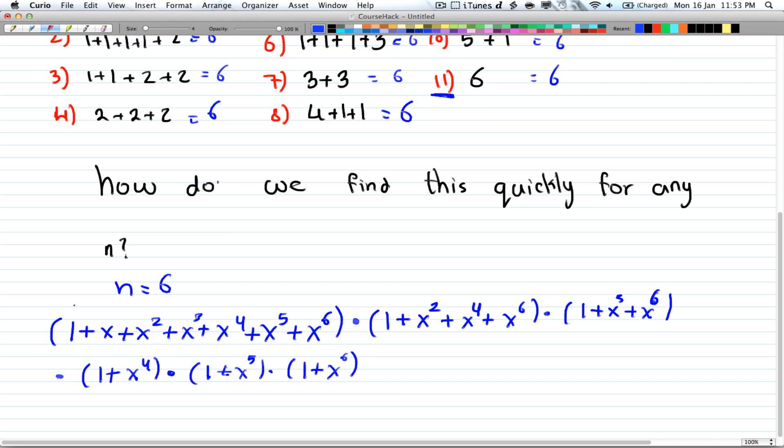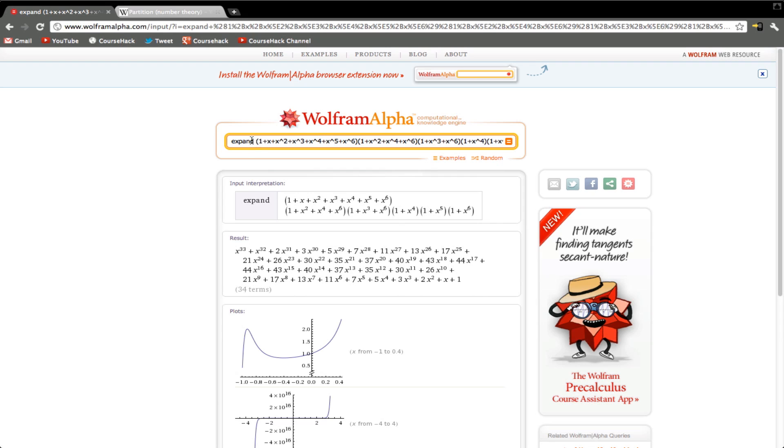So this is the expression of finding how many partitions there are for the number 6. If we go to WolframAlpha, expand the term: 1 plus x plus x squared plus x cubed plus x to the fourth plus x to the fifth plus x to the sixth, that's for the ones, multiplied by 1 plus x squared plus x to the fourth plus x to the sixth, multiplied by 1 plus x cubed plus x to the 6, multiplied by 1 plus x to the 4th, and multiplied by 1 plus x to the 5th, multiplied by 1 plus x to the 6th.